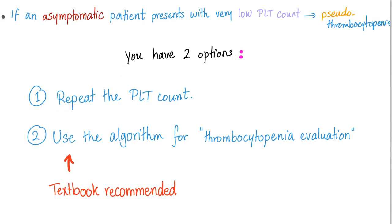You have two options. Repeat the platelet count — if it's normal, then it was pseudo and we don't care. Or use the textbook option: the algorithm of thrombocytopenia evaluation, which is the topic of today.